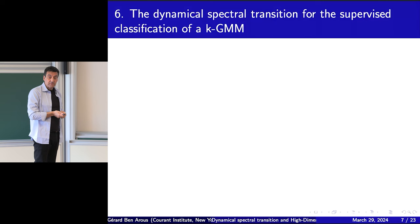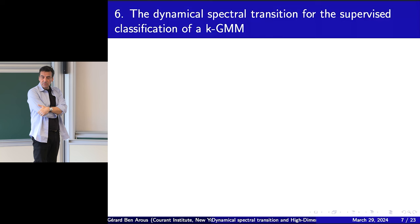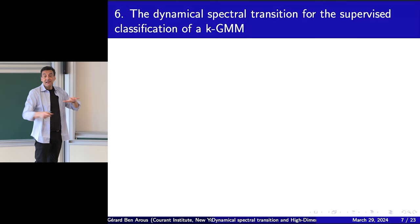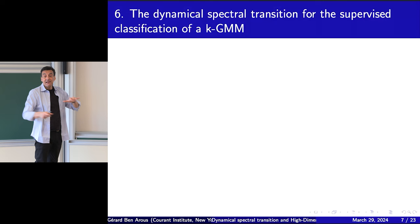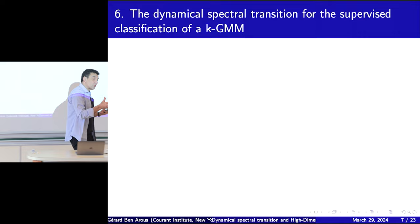Let me take a serious model: classification of a K-class Gaussian Mixture Model (GMM), the real workhorse of classification. You have K classes — dog, cats, cars — and you want to classify. You have no clue about the structure of the real distribution. One way to think about it: the distribution is really centered on K different things in a very high-dimensional space, and around them you put a Gaussian distribution.